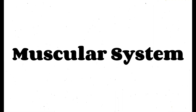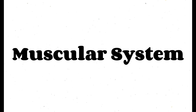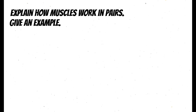Now we're going to look at some questions and answers from the muscular system. First one: explain how muscles work in pairs and give an example. When muscles contract, bones are pulled in that direction and the opposite side muscles relax. For example, for the hand to fold inwards from the elbow, the bicep will contract whereas the